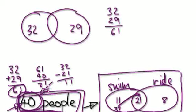But there are only 40 people in your class. So we would get 61 take away the number of people in your class, and then came to 21. So the overlap must be 21.